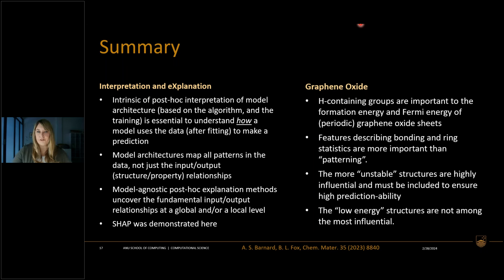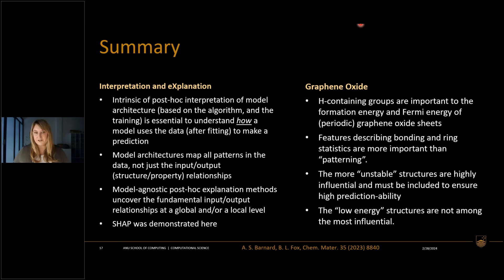For graphene oxide, hydrogen-containing groups are most important for predicting formation energy, while oxygen-related features are more important for Fermi energy. Features describing bonding and ring statistics are more important than patterning, which is good because patterning of oxygen on graphene oxide is very difficult experimentally. More unstable structures are highly influential and it's important to include them in the dataset — rather counterintuitive when one might feel only stable structures should be included. Low-energy structures are actually not among the most influential.